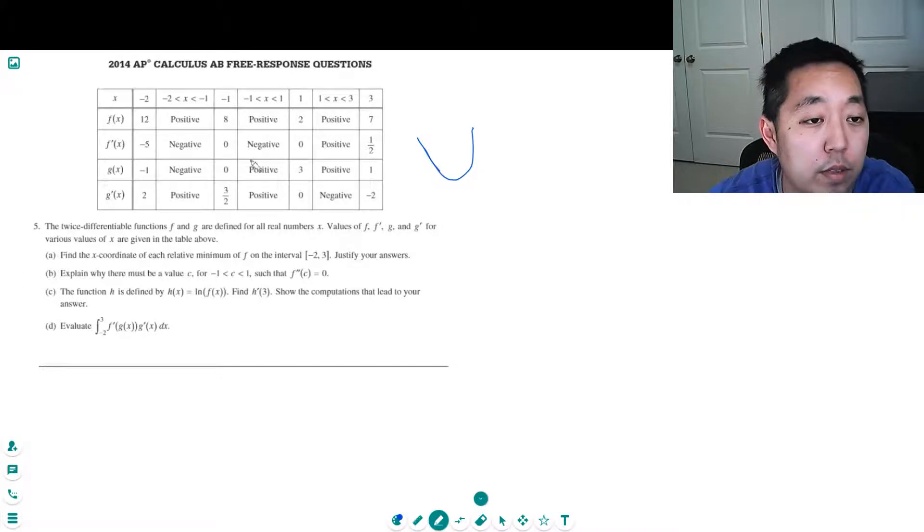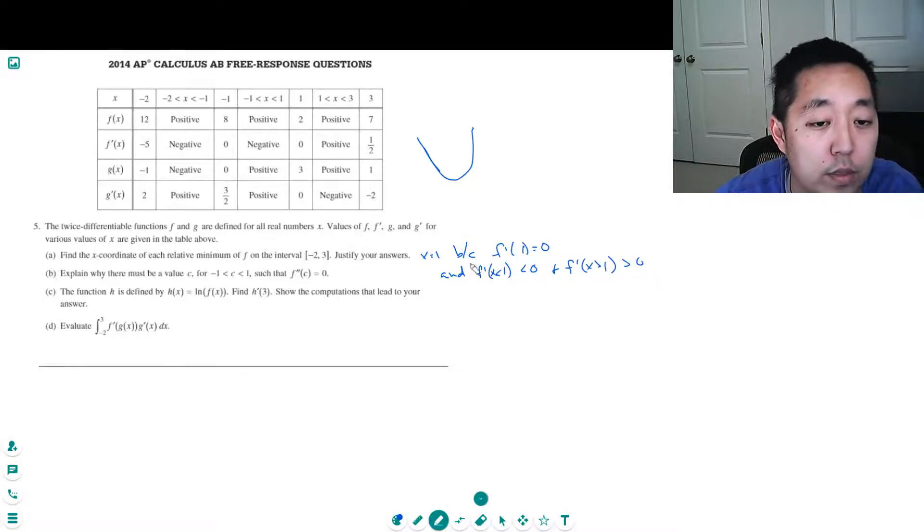So at x equals 1, because f prime of 1 equals 0 and f prime of x less than 1 is less than 0 and f prime of x greater than 1 is greater than 0. It goes from negative to positive, that's the first derivative test.